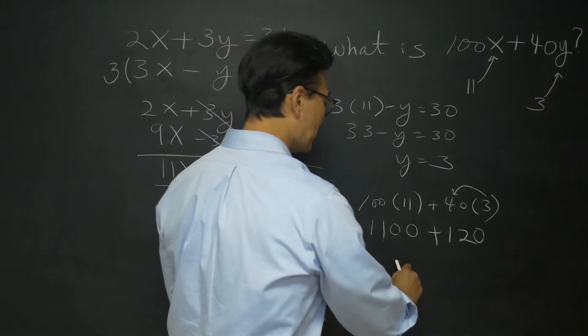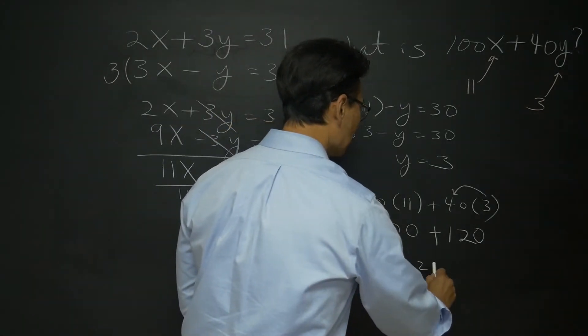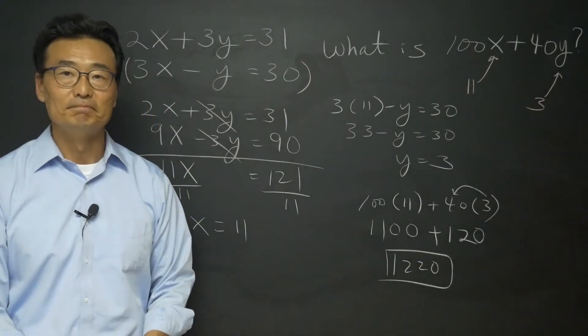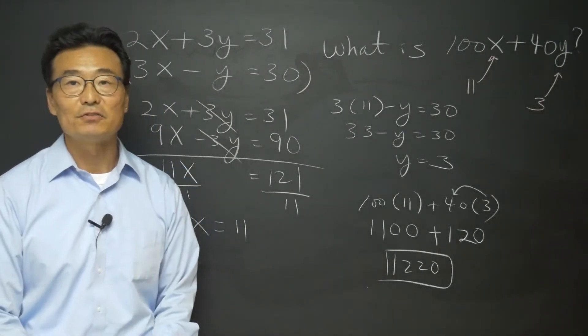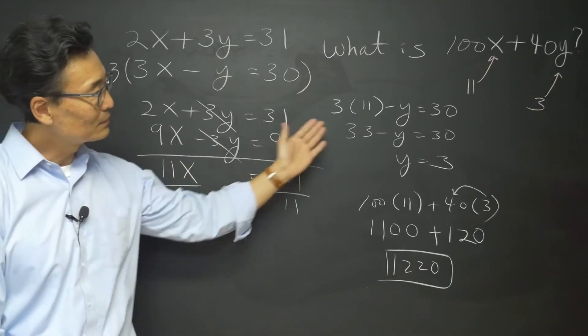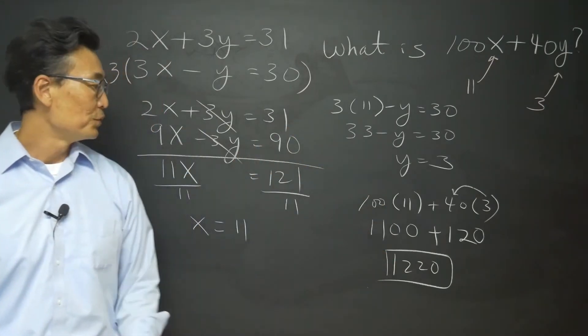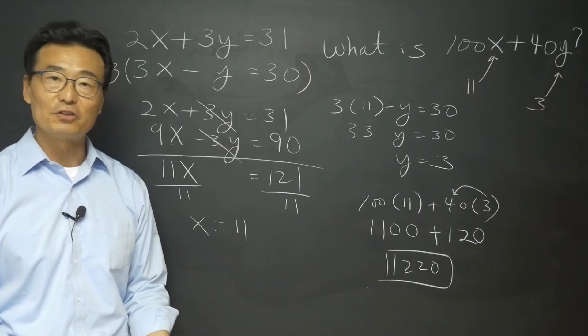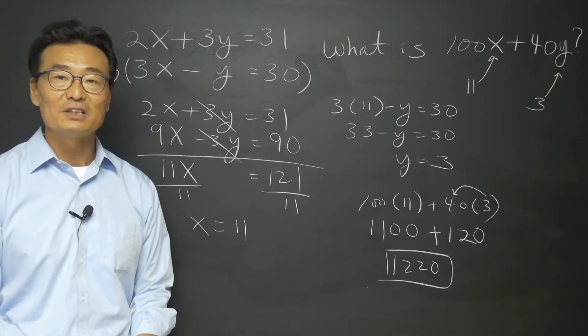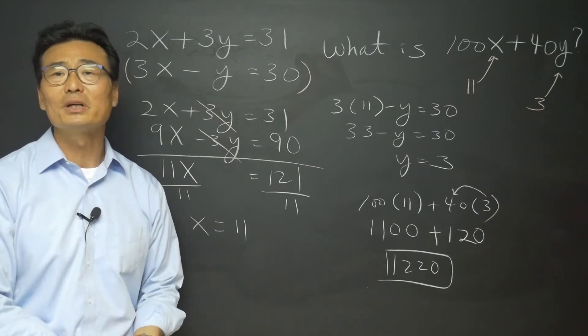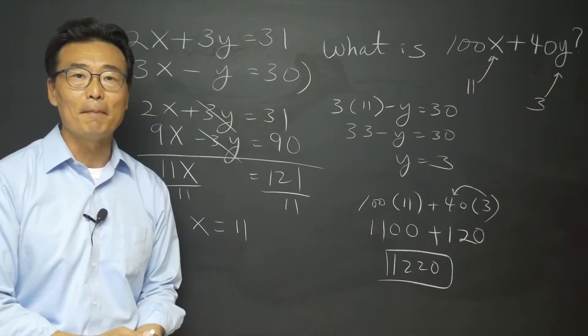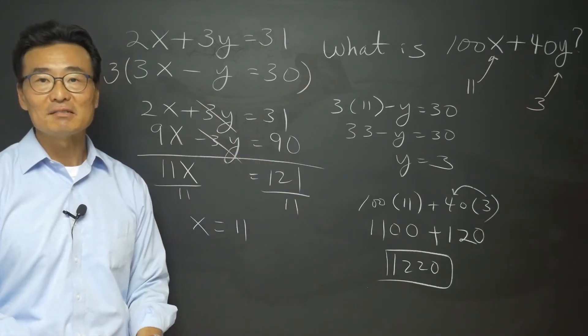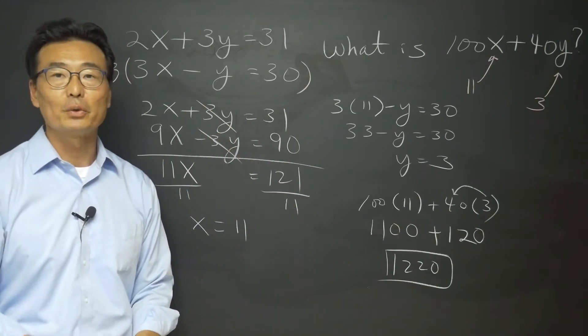If we add these, then we get 1220, and that will be the answer for this question. But as you can see, it took quite a few, maybe one too many steps for SAT purposes. Remember, for the SAT you have to try and get the question done as quickly as possible. You're limited on time.